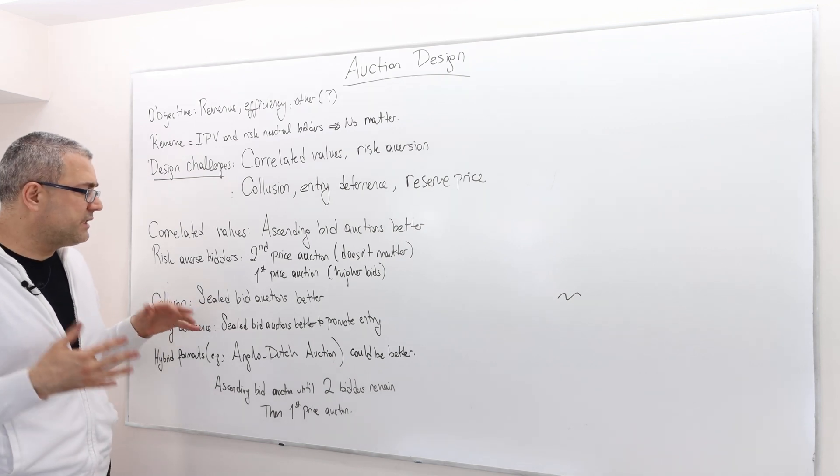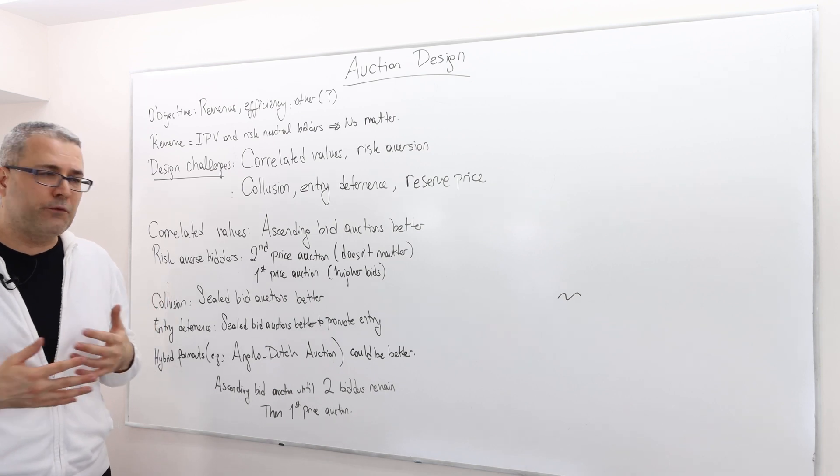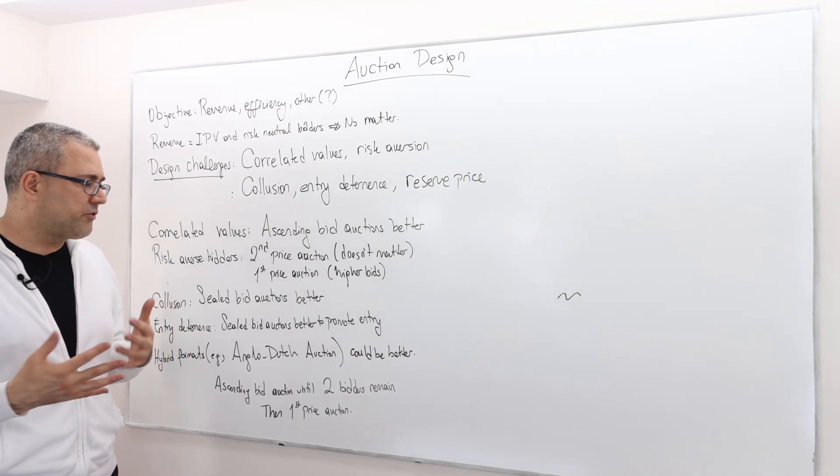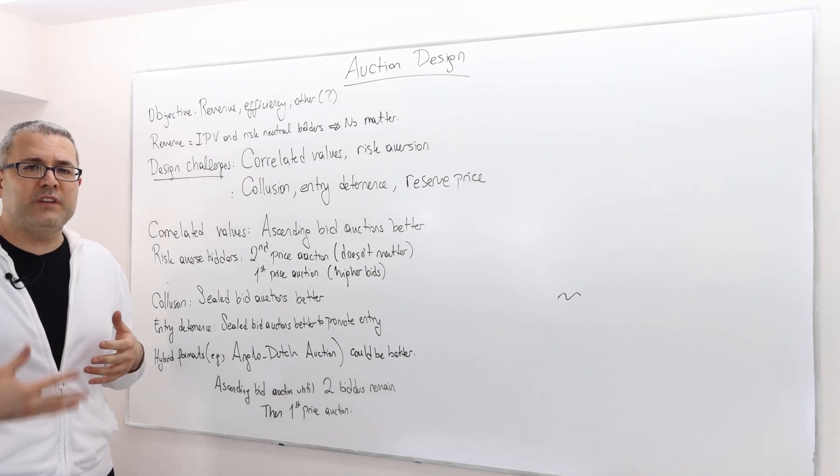In terms of collusion, sealed bid auctions like first price and second price actually perform better. And in terms of entry deterrence, again, sealed bid auctions perform better to promote entry.